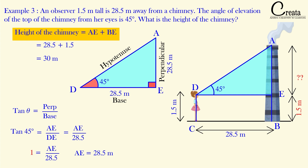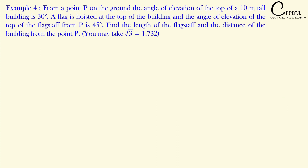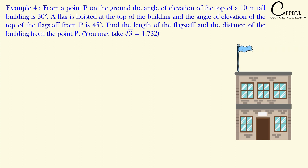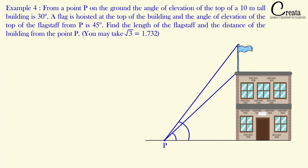We are done with Example 3. Let's move to Example 4. From a point P on the ground, the angle of elevation of the top of a 10-meter tall building is 30 degrees. A flag is hoisted at the top of the building, and the angle of elevation of the top of the flagstaff from P is 45 degrees. Find the length of the flagstaff and the distance of the building from point P. The angle of elevation concept applies here — we are looking upward.